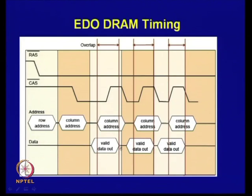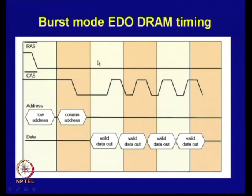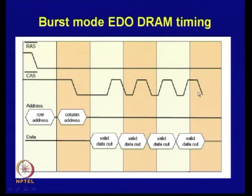In burst mode EDO RAM timing, after generating a row address strobe, the row address remains latched and subsequent column address select signals are generated one after the other, producing a burst of data in each clock cycle from the same row. This overlapping of data reading and column address generation is what makes dynamic RAM faster in EDO burst mode.